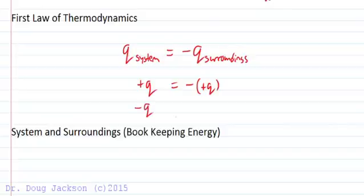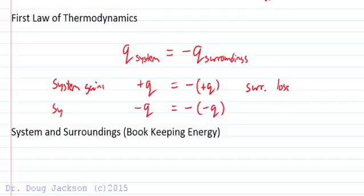So if the system has positive heat, then the surroundings is going to have negative heat. Likewise, if the system is losing heat, that's a negative times a negative, that means the surroundings gains heat. So this is if system gains, the surroundings lose. And if the system loses heat energy, the surroundings will gain energy because negative times a negative gives us a positive.